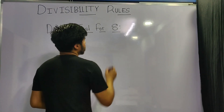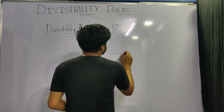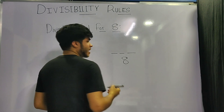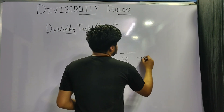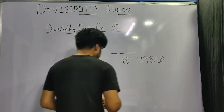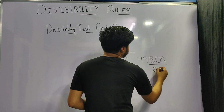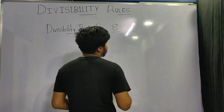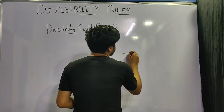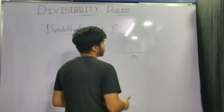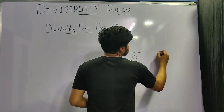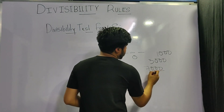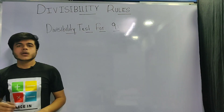Moving on to the number 8: if the last three digits of the number are divisible by 8, then the number is divisible by 8. For example, 79808 — since 808 is divisible by 8, the original number is divisible by 8. An additional property: if all of the last three digits are zero (e.g., 1000, 5000, 7000), the number is also divisible by 8.